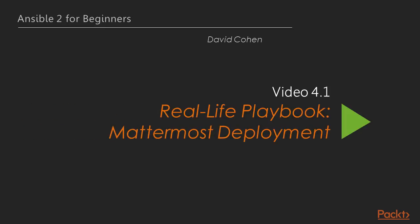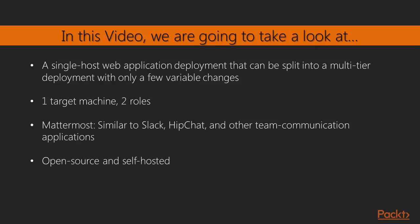In this video, we're going to be doing something really fun — taking a look at our first real-life project. We're going to be deploying Mattermost. Mattermost is something similar to Slack or HipChat, basically a team communication application where you can have group chat, one-on-one chat, image, video, file, and document sharing. The really nice thing about it is that it's open source and self-hosted.